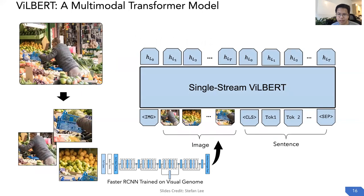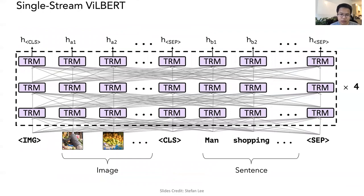Given an image, we first use a pre-trained detector to extract features. An intuitive way is to replace one sentence with the image features, and feed them together into a single-stream ViLBERT model. For the single-stream model, the left side is the image feature and the right side is the sentence feature, and we feed them into a bunch of transformer layers to get the final representations.